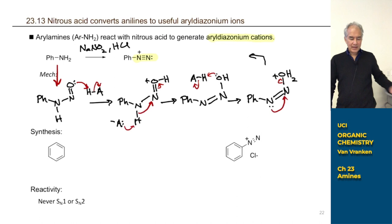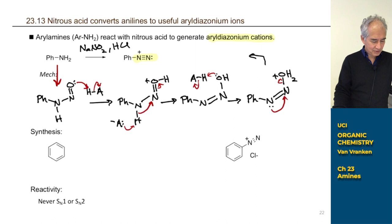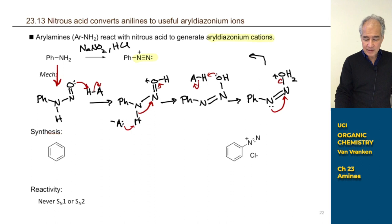These aryl diazonium cations have useful reactivity, and I don't think it's going to be the reactivity that you expect. You can store them as solutions — you can't dry them out. They might explode because they want to generate nitrogen gas. Let's walk through a synthetic sequence where you could start with benzene and go all the way to an arene diazonium ion using reactions that you now know. You've got to start off by putting a nitrogen-carbon bond on your benzene ring.